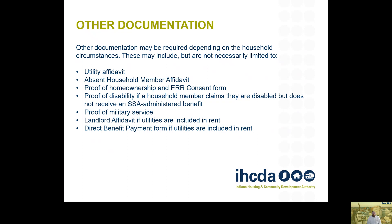Other documentation may be required depending on household circumstances but is not required for everyone. These may include utility affidavits, absent household member affidavits, proof of home ownership and ER consent form, proof of disability if a household member claims disability but does not receive an SSA administered benefit, proof of military service, landlord affidavit if utilities are included in rent, and the direct benefit payment election form if utilities are included in the rent.